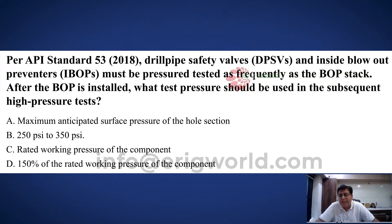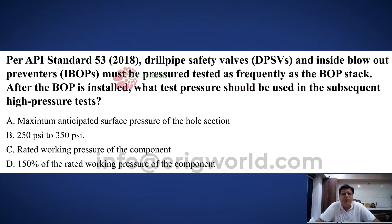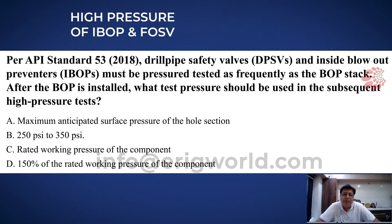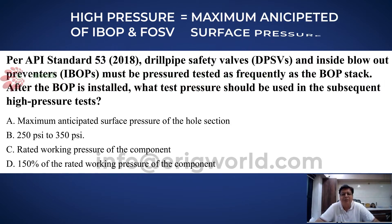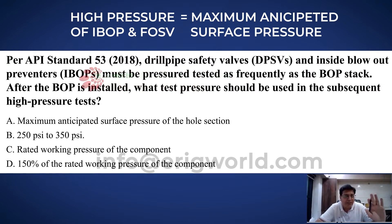As per IPS standard 53-2018, drill pipe safety valve and inside BOP must be pressure tested at the same frequency as the BOP. After the BOP is installed, what test pressure should be used for the subsequent high-pressure test? The high-pressure test of FOSV and IBOP should be at least equal to the maximum anticipated surface pressure of that section.